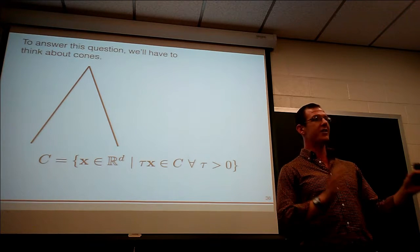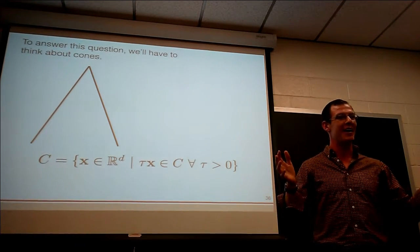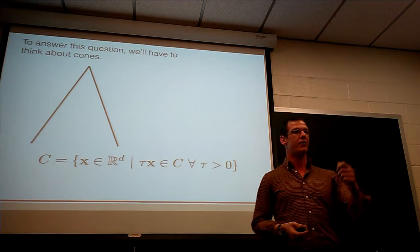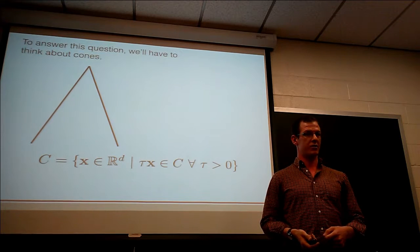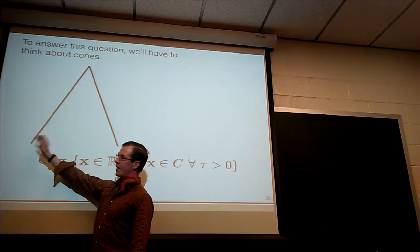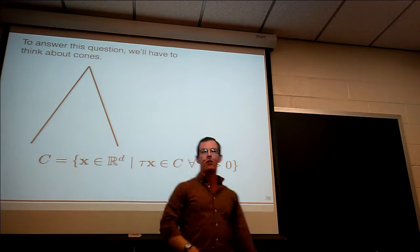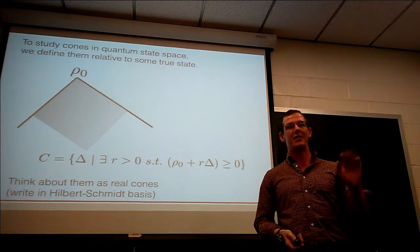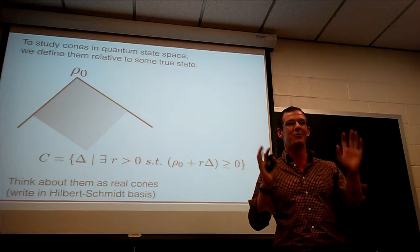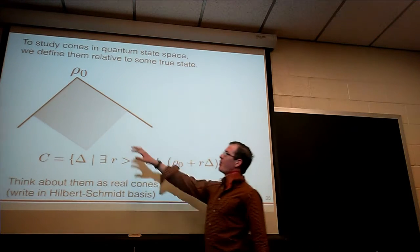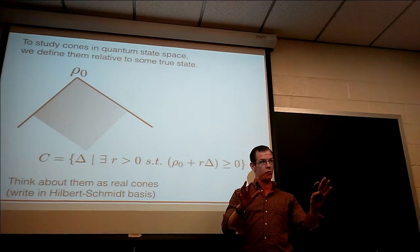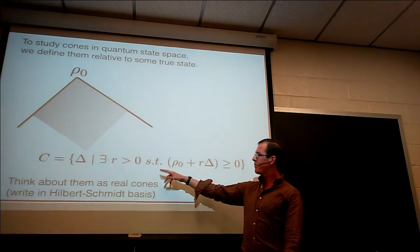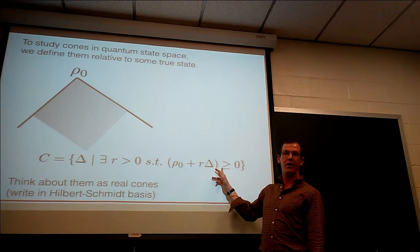Classically, a cone is a subset of a real vector space such that every positive scalar multiple of a vector in the cone is also contained within the cone. We define a cone in quantum state space — the 'quantum cone' — around some true state rho-naught, as the collection of all directions I can move in state space such that, taking a step in that direction, I remain a valid quantum state.